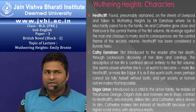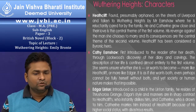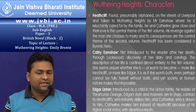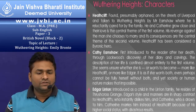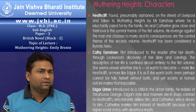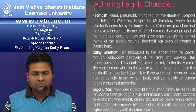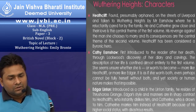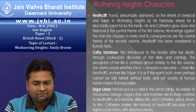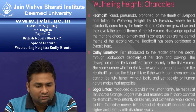The important characters of the novel are as follows. Heathcliff was found, presumably orphaned, on the streets of Liverpool and taken to Wuthering Heights by Mr. Earnshaw, where he is reluctantly cared for by the family. He and Catherine grow close, and their love is the central theme of the first volume. His revenge against the man she chooses to marry and its consequences are the central theme of the second volume. Heathcliff has been considered a Byronic hero. Kathy Earnshaw is first introduced to the reader after her death through Lockwood's discovery of her diary and carvings. The description of her life is confined almost entirely to the first volume. She seems unsure whether she wants to become more like Heathcliff or more like Edgar — as if she wants both, and yet society makes that impossible.